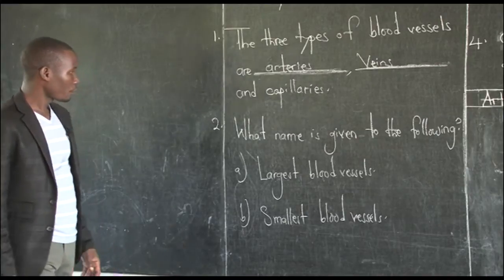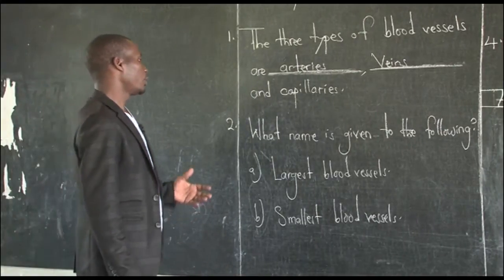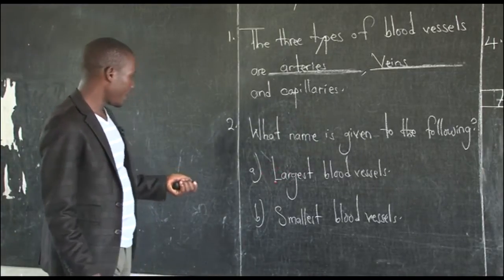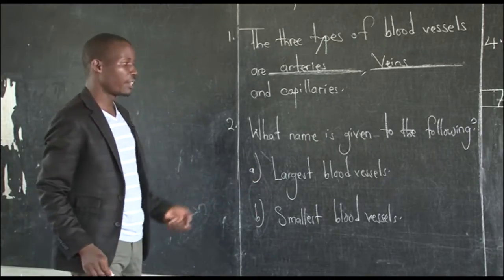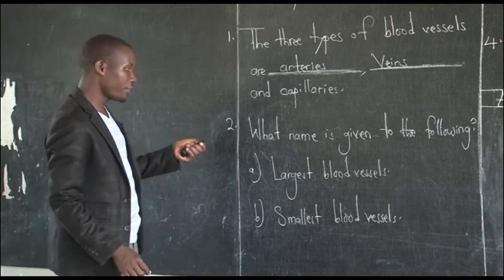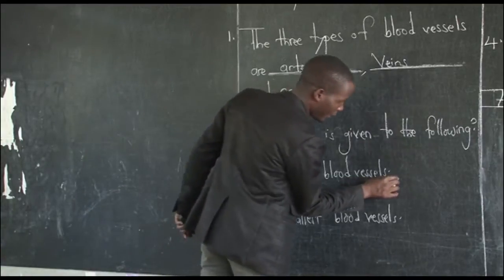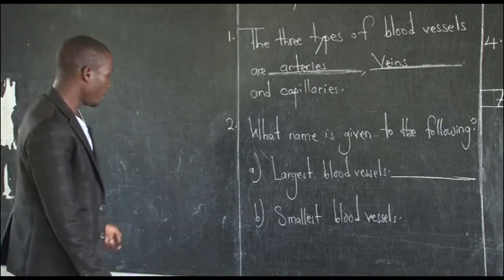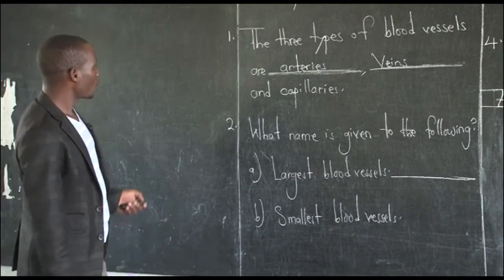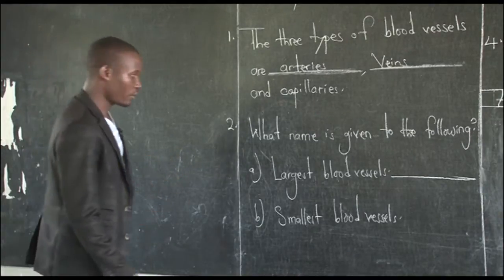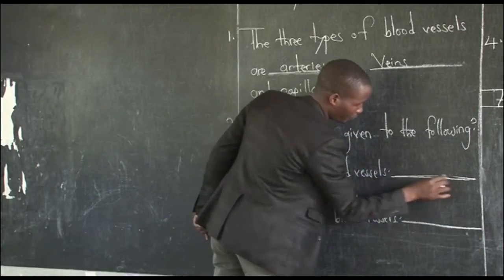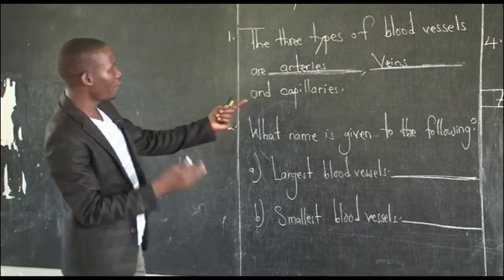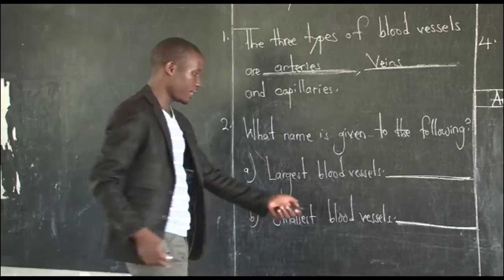Number two asks: what name is given to the following? Part A: the largest blood vessel. From the three — arteries, veins, and capillaries — which are the largest? You can answer here. Part B asks for the smallest blood vessel. Of arteries, veins, and capillaries, which are the smallest? Remember, veins are the medium blood vessels, so we remain with arteries and capillaries to determine which is largest and which is smallest.